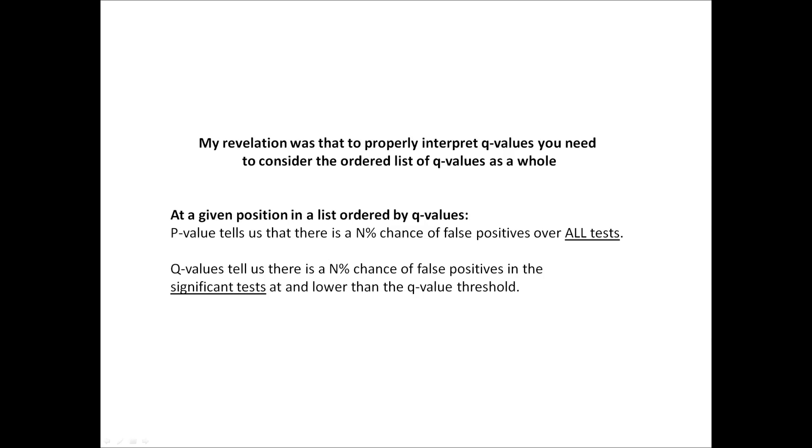Looking in an imaginary ordered list of 20,000 expression array probe sets, the hundredth has a p-value of 0.01 and a q-value of 0.015. The p-value tells us that there is a 1% chance of false positives, so over 20,000 probe sets, we would expect 200 false positive probe sets, potentially the entirety of our top genes.